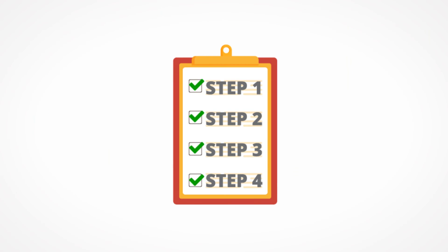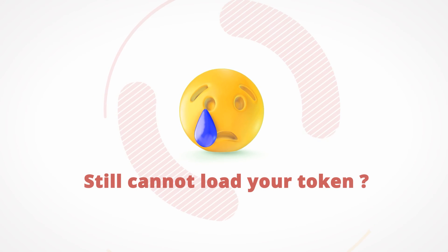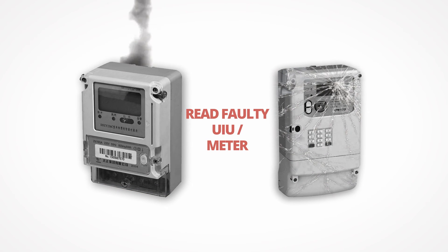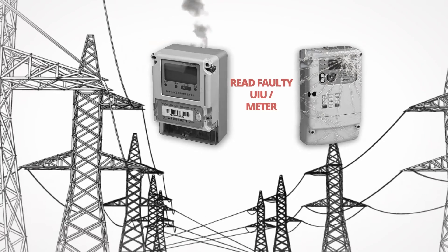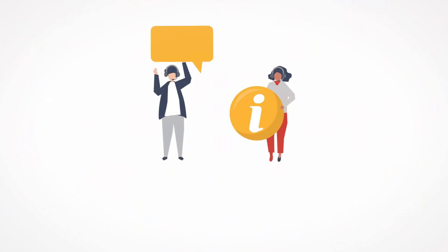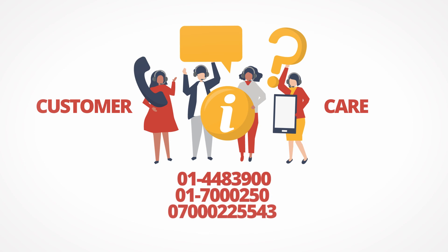If you have done all this and you still cannot load your token, you might have a faulty UIU box or faulty meter, or there might be no supply from the distribution transformer to the meter. In this case, please call our customer care numbers on the numbers displayed on your screen.